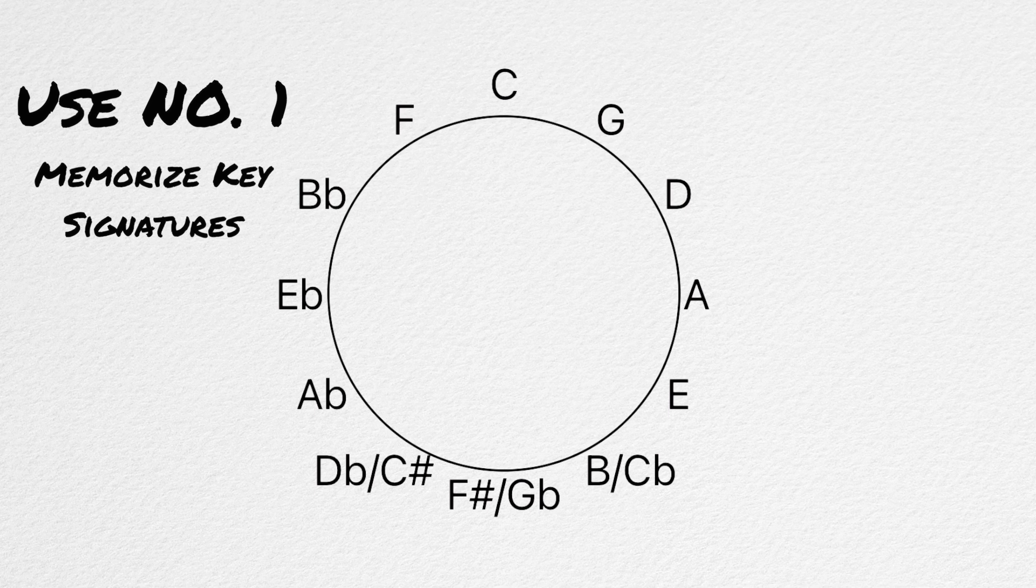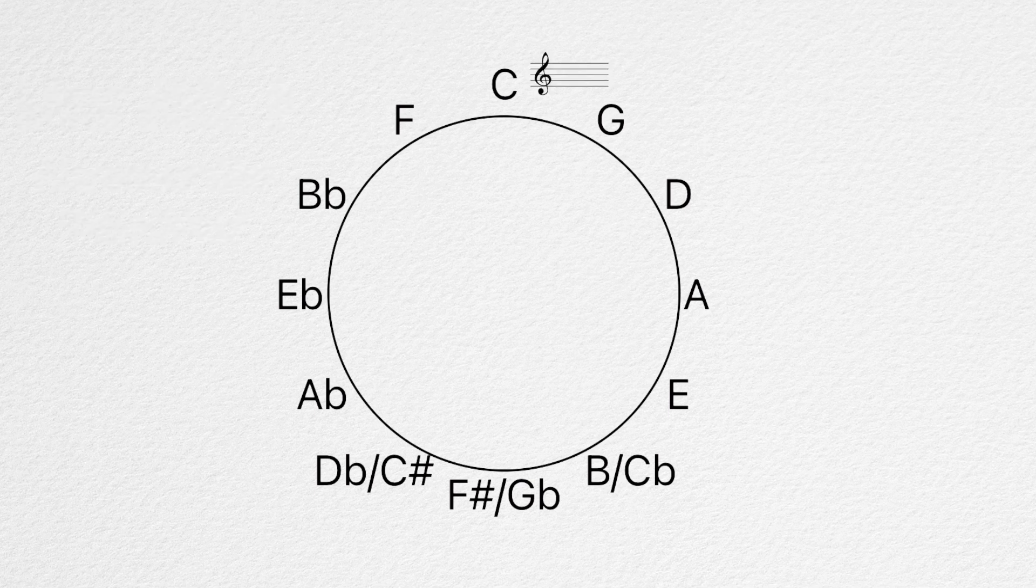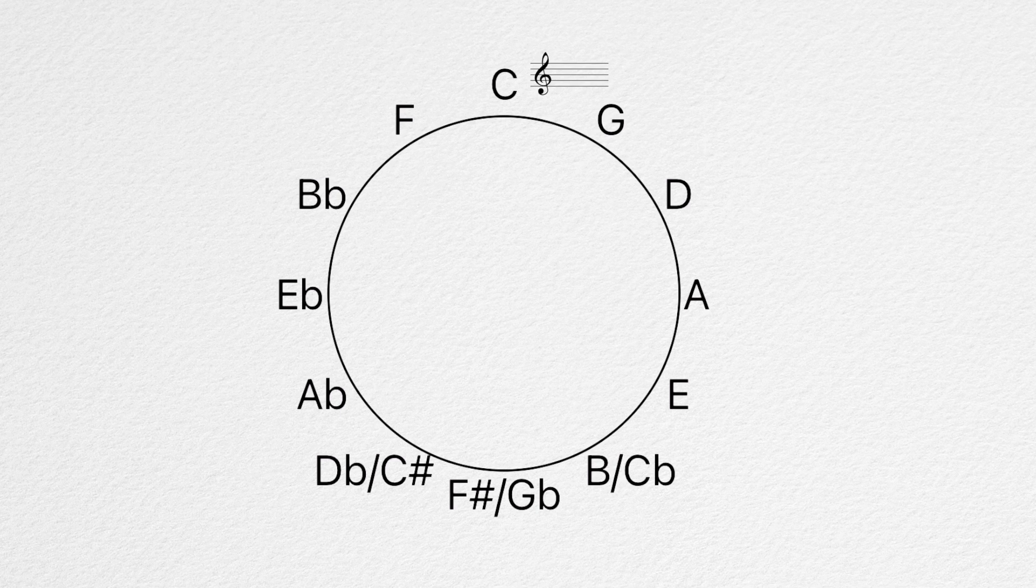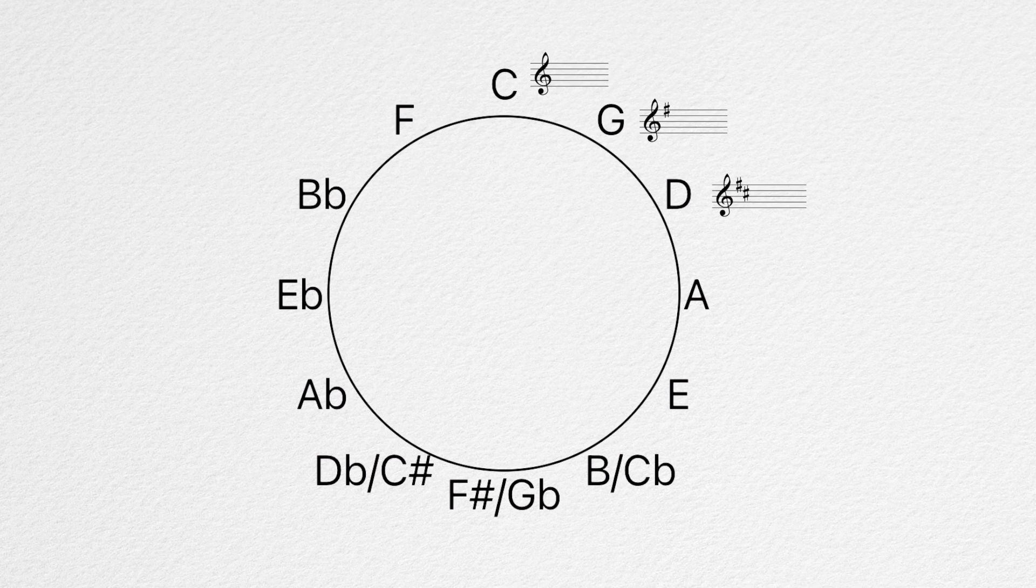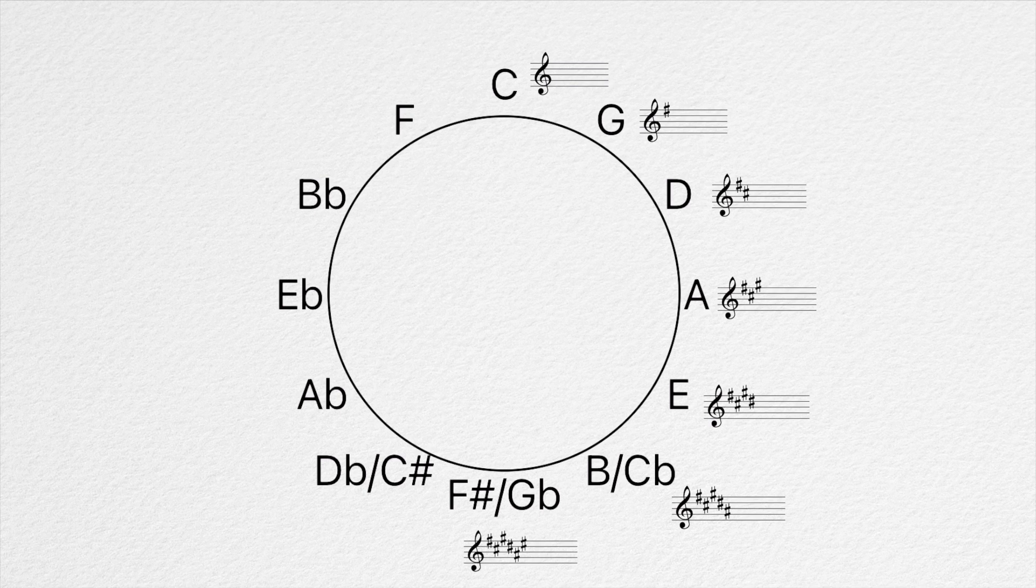Well, probably the most common use for it for aspiring musicians and theorists alike is to use it as a memorization aid for their key signatures. C is at the top of the circle, and the key of C has no sharps or flats. Every time we move one direction or the other, we add a sharp or flat. When moving clockwise, we add one sharp to the key signature for every step we take away from C. G is one step away from C, and the key of G major has one sharp in the key signature. D is two steps away and has two sharps, etc., until we get to the center, F sharp, which has six sharps in the key signature.